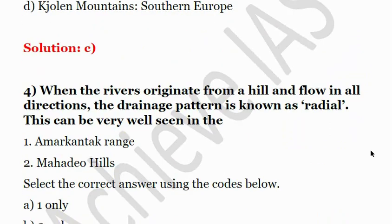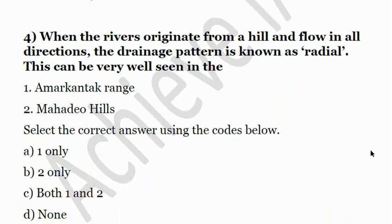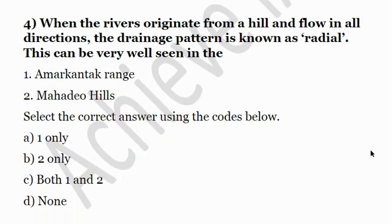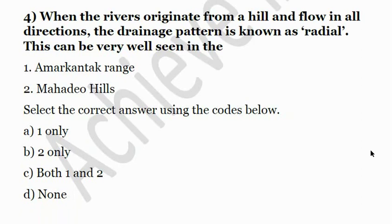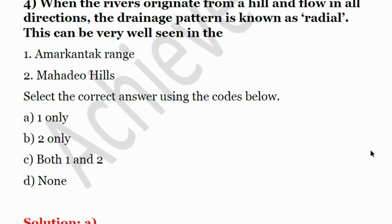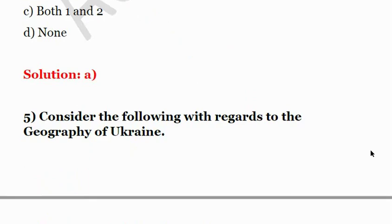Fourth question: When rivers originate from a hill and flow in all directions, the drainage pattern is called radial. This can be seen in: first, Amar Kantak Range; second, Mahadeo Hills. This type of radial drainage pattern is seen in Amar Kantak Range. The answer is A — first only.